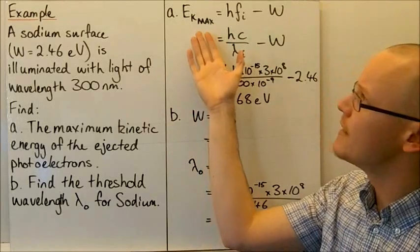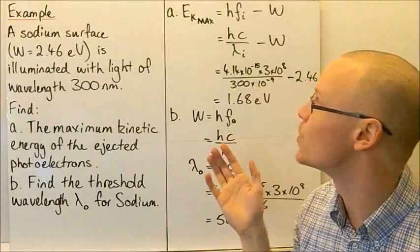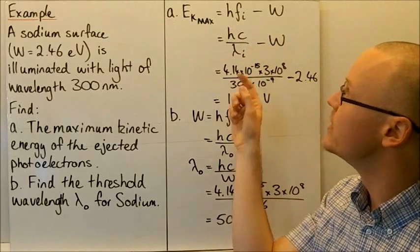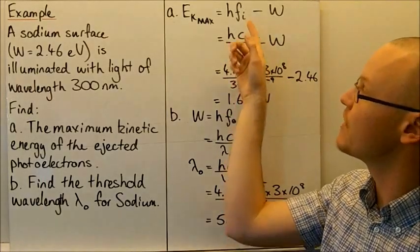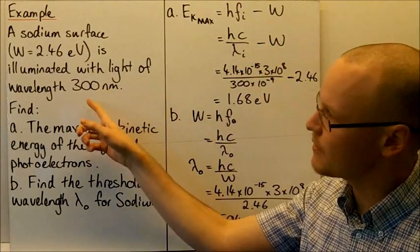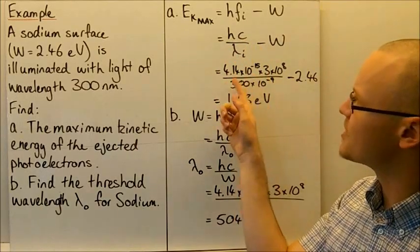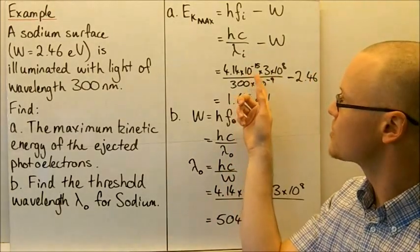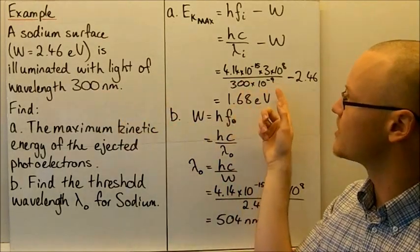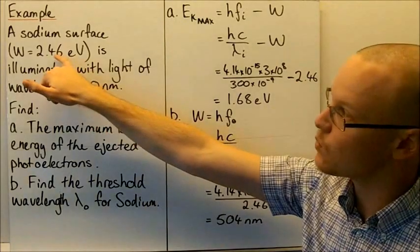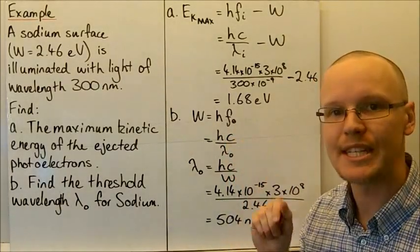Using the photoelectric equation, the maximum kinetic energy equals the incident energy minus the work function. Substituting using c = fλ to express frequency in terms of wavelength: KE_max = hc/λ − W. Substituting in the electron-volt-seconds value for Planck's constant, the speed of light (3 × 10⁸), wavelength 300 × 10⁻⁹ m, and the work function for sodium, the maximum kinetic energy is 1.68 electron volts.